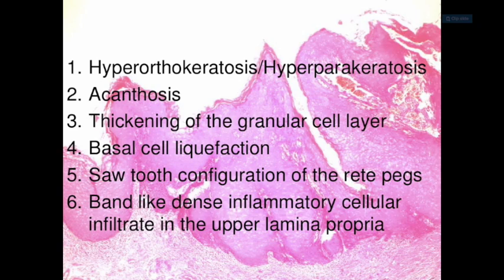The treatment for oral lichen planus is not very definitive, so palliative treatment is considered. Since it is an autoimmune reaction, corticosteroids are the best bet. Important viva topics to review include: Grinspan syndrome, graft-versus-host disease, Max Joseph spaces, civatte/cytoid/hyaline bodies, Wickham's striae, and sawtooth rete ridges — some of the things they might ask for two markers in your viva.